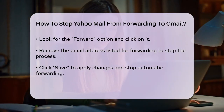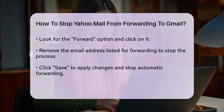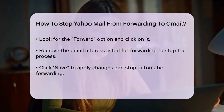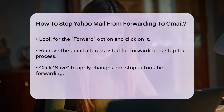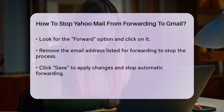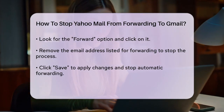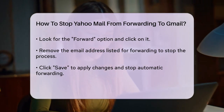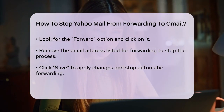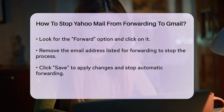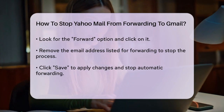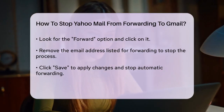To stop forwarding emails, you need to disable this feature. Look for the option that says Forward and click on it. You will see the email address to which your emails are being forwarded. To stop the forwarding, simply remove the email address from this field. After removing the email address, click Save to apply the changes. This will stop the automatic forwarding of emails from your Yahoo Mail account to your Gmail account.